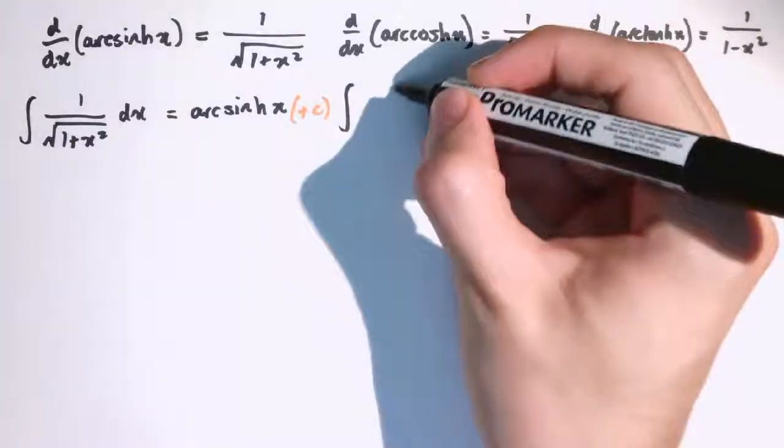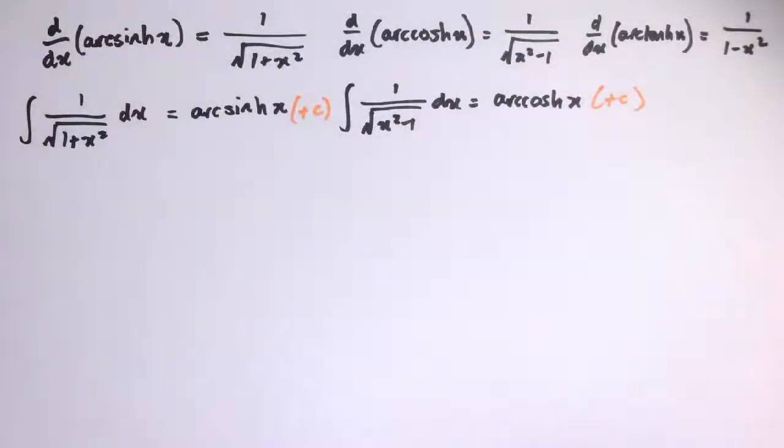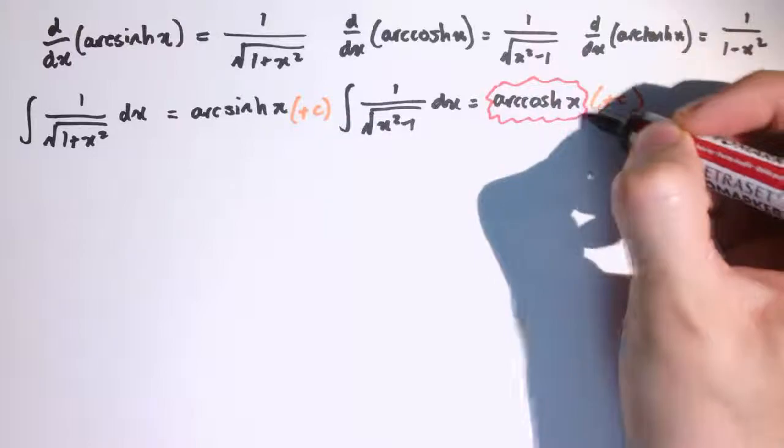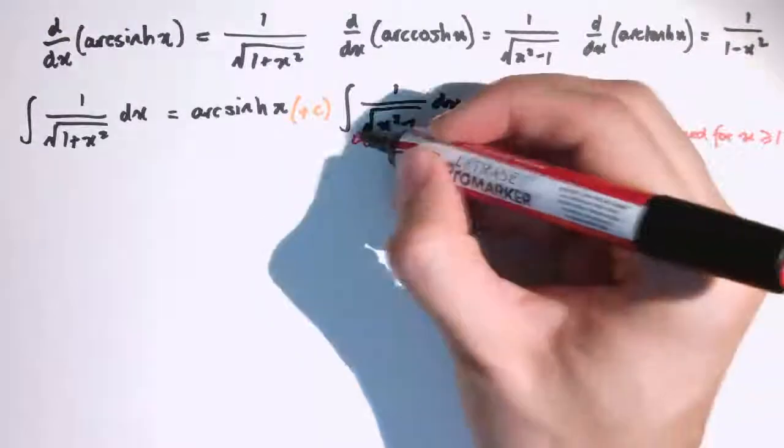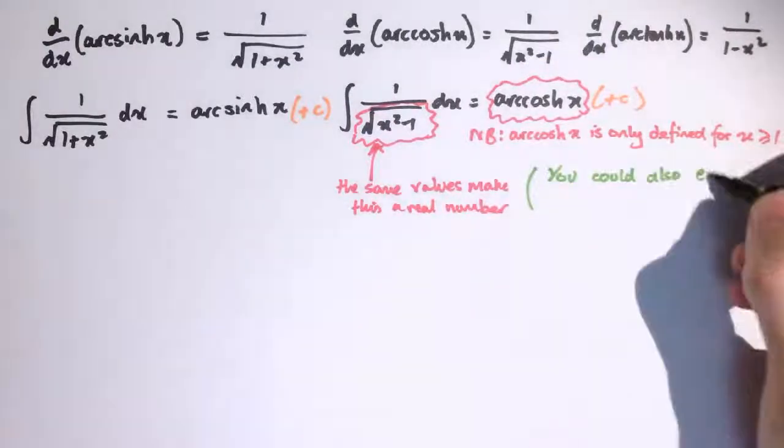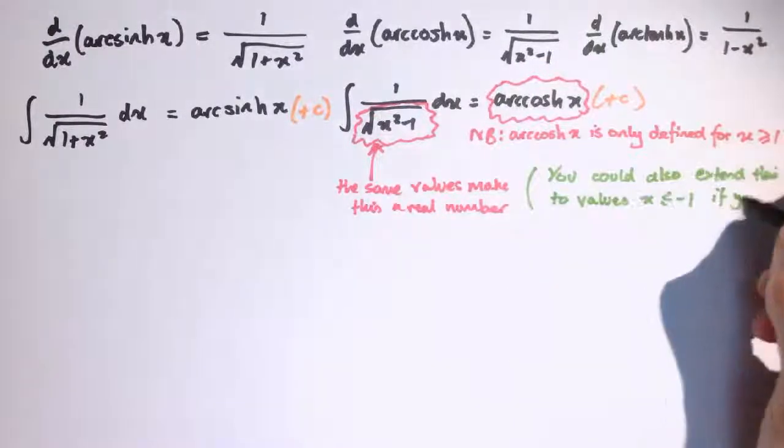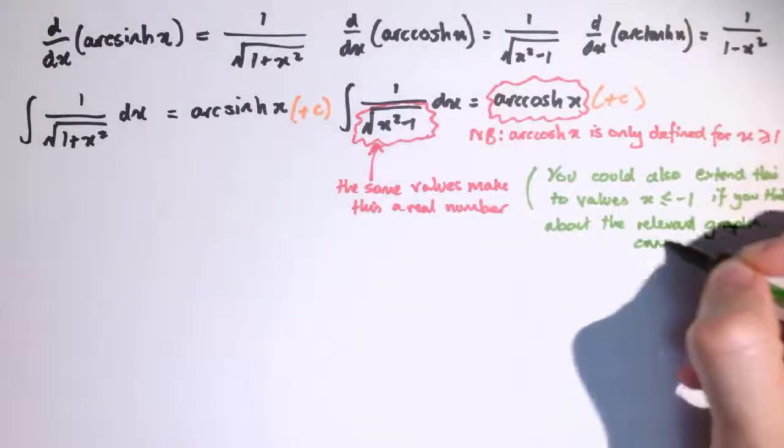The integral of 1 over the square root of x squared minus 1 dx is arc cosh of x plus c. But note that arc cosh of x is only defined for x is greater than or equal to 1, and those same values make this part of the integral here a real number. You can also extend this to values of x less than or equal to minus 1, and if you think about the relevant graphs carefully, you should be able to work it out.